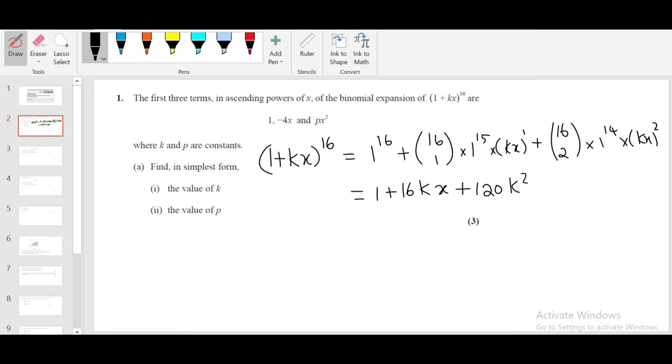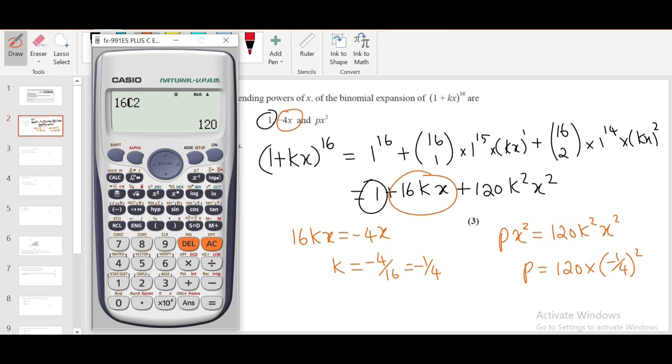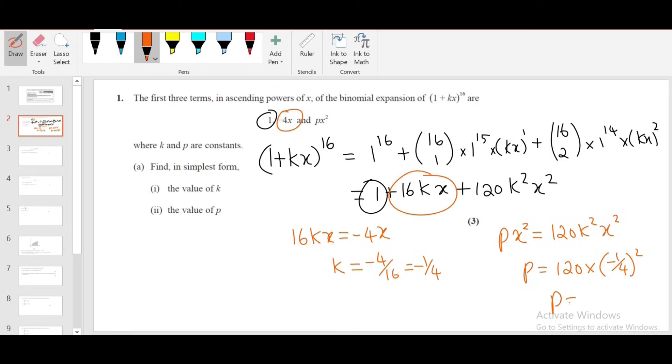Now compare the terms. First term is 1. Second term: 16kx = -4x, so k = -4/16 = -1/4. Now compare the third term: px² = 120k²x². So p = 120 × k², which is 120 × (1/16) = 15/2. We got k = -1/4 and p = 15/2.